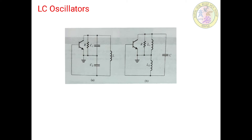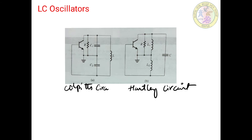Figure A shows the Colpitts circuit and Figure B shows the Hartley circuit. In these two circuits, the biasing circuit is not included — it is just a connection to highlight the connection of the tank circuits. Therefore, the biasing elements are excluded.